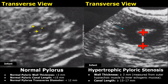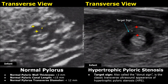This image shows the normal pylorus in transverse plane — its hypoechoic wall is not thick and measured less than 3 millimeters, which is a normal measurement. In pyloric stenosis, the pyloric wall thickness will be greater than 3 millimeters. Here you can see this hypoechoic pyloric wall is thickened — it is much thicker than normal. This appearance is termed the target sign, also called the donut sign, and it is the classic transverse ultrasound appearance of hypertrophic pyloric stenosis. In a normal pylorus, we will not see a donut sign or target sign.